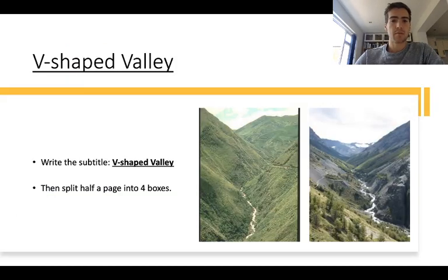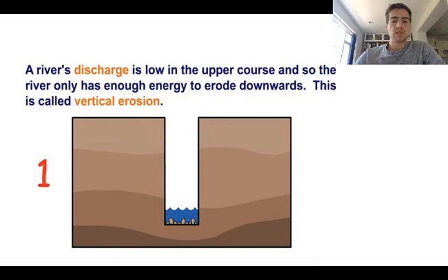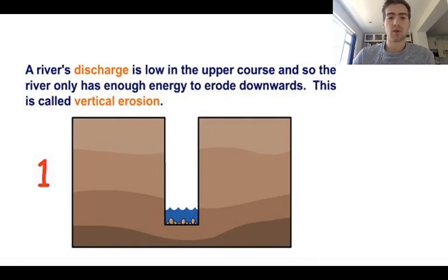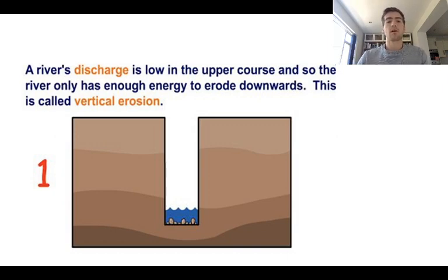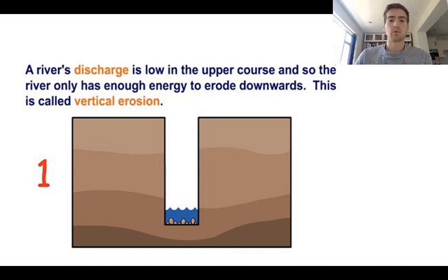So to start with, v-shaped valleys. You can see two pictures of v-shaped valleys there. A v-shaped valley forms in the upper course because of something called vertical erosion. High up in the hills and the mountains, when water lands on the slopes, all that water wants to do is get as low as possible. Because of this, vertical erosion happens, which means the water erodes downwards instead of side to side.